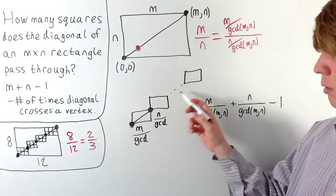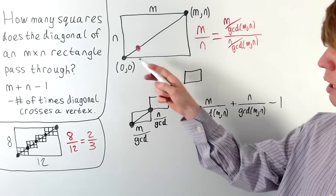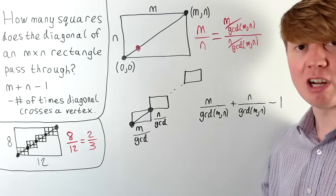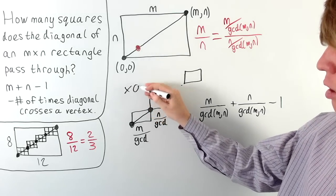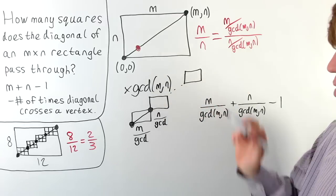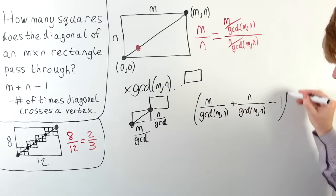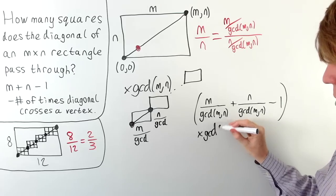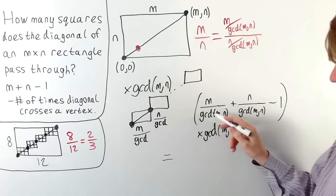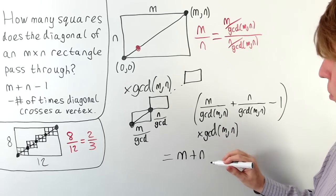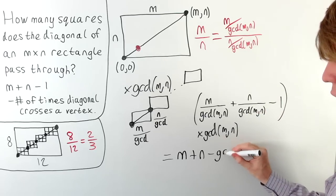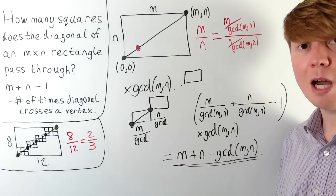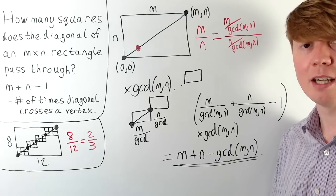All that remains is to count how many small rectangles we have. We started with an m by n rectangle split into copies of the (m/GCD) by (n/GCD) rectangle, so the number of copies is exactly GCD(m, n). Multiplying the per-rectangle count by GCD(m, n), the GCD cancels with the first two terms, giving m + n − GCD(m, n). This is the total number of squares the diagonal passes through for an m by n rectangle.